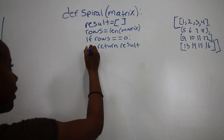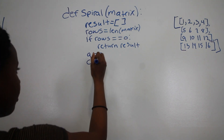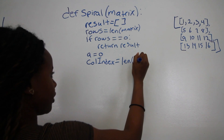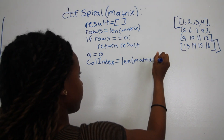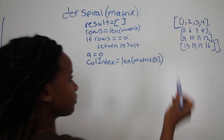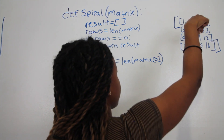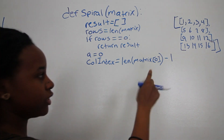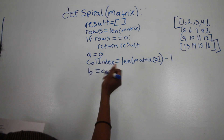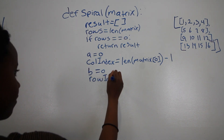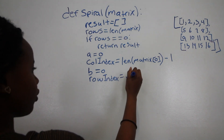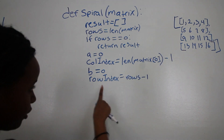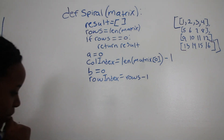Next we create a helper variable called `col_index`, equal to the length of the first row of the matrix minus one. So there are four columns but the column index equals three. We also have `b` equals zero, and `row_index` equals rows minus one — because indexes start at zero, so row index is also three for a four-row matrix.